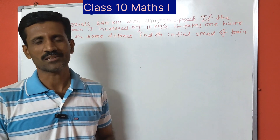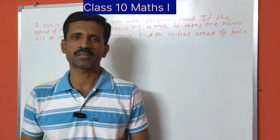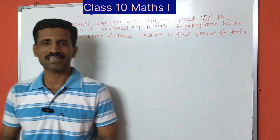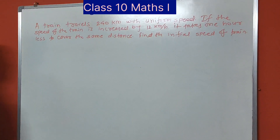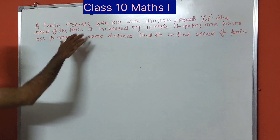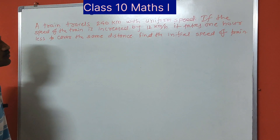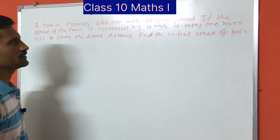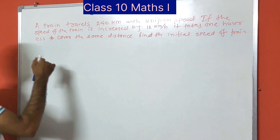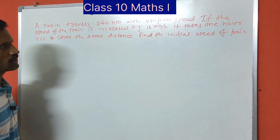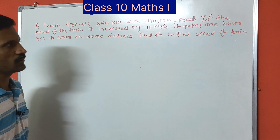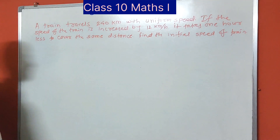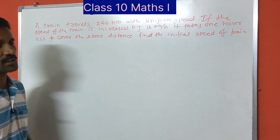Hello friends, today let's solve one question from the topic quadratic equations from class 10 maths part 1. The question is: a train travels 240 km with uniform speed. If the speed of the train is increased by 12 km per hour, it takes 1 hour less to cover the same distance. Find the initial speed of the train.